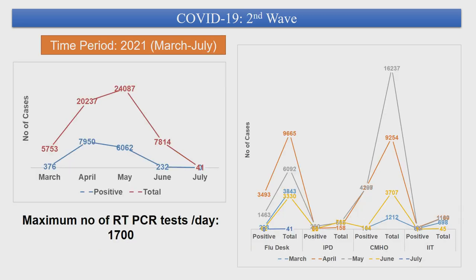During the second wave — March to July — the maximum number of samples and positivity was observed during April and May, both from CMHO and AIIMS fluid tests. The maximum number of RT-PCR tests conducted per day during the second wave was 1,700. In the third wave in early 2022, January to March, we saw a sudden increase: 13,000 cases were observed in January, which also had the highest positivity from both the fluid test and CMHO samples.